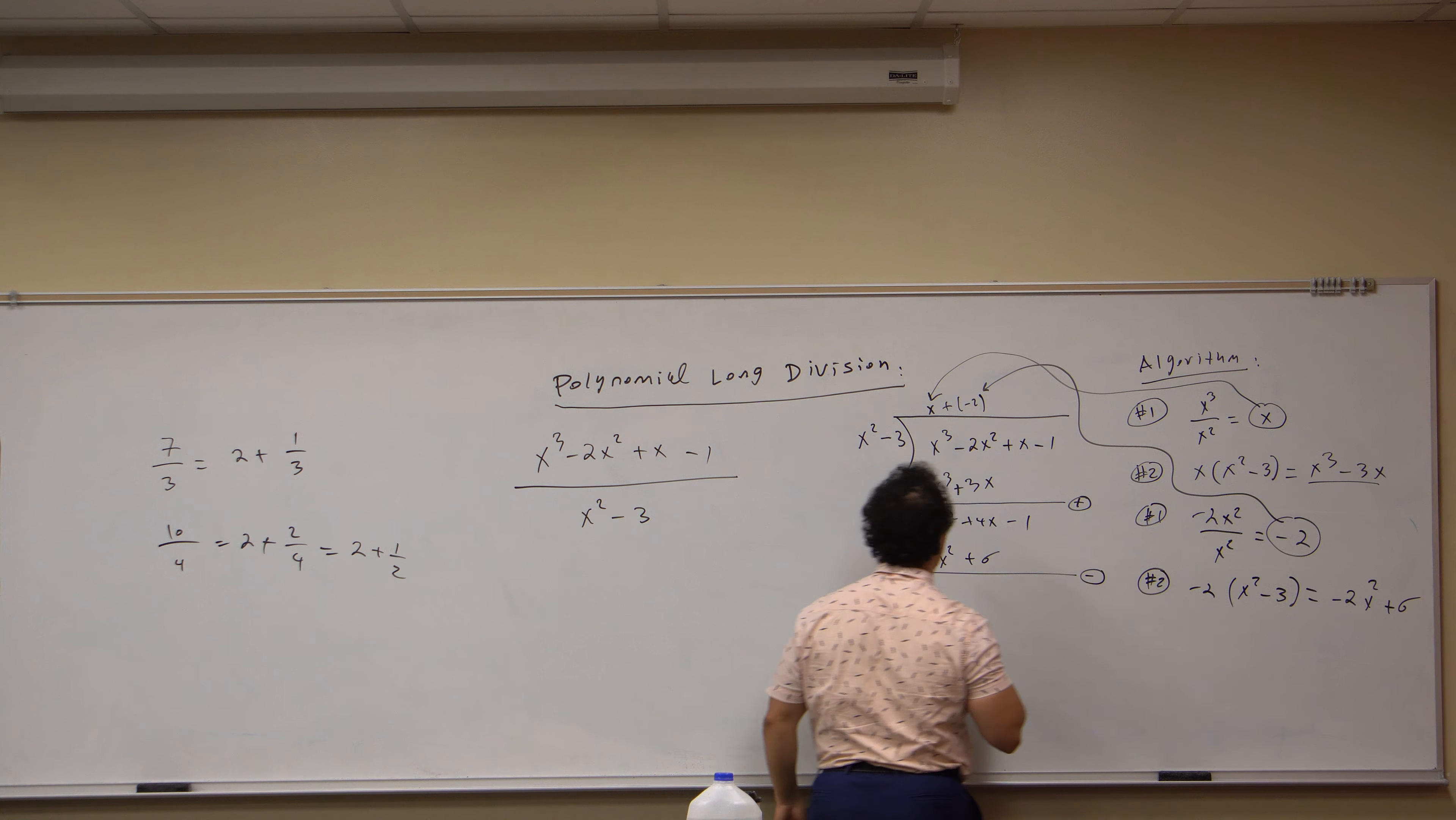And we, again, take this leading term, four x, divided by the leading term here, x squared, compute their ratio, which I get four over x. At this point, whenever you get something that doesn't divide evenly through, whenever you get a fraction like four over x, this is where we terminate the algorithm.